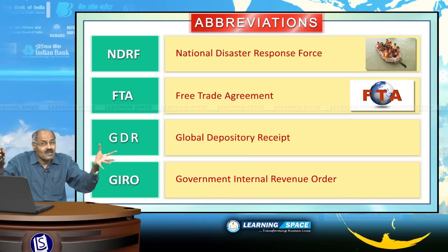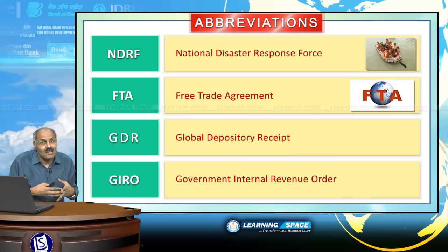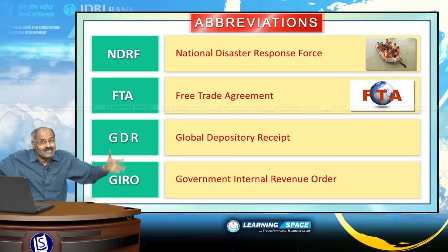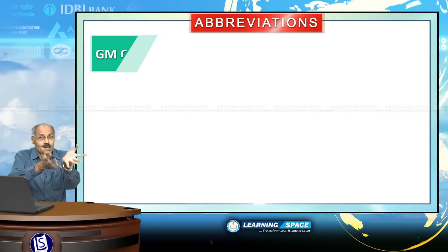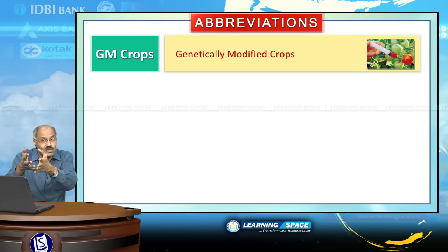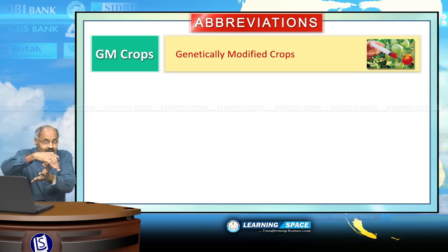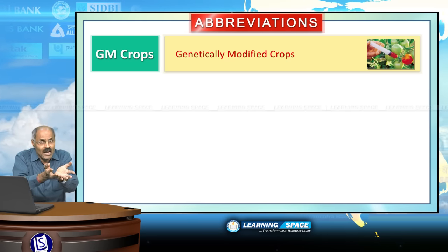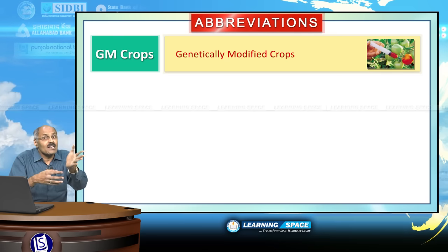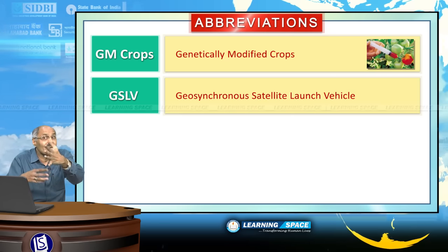The government is trying to come up with a Unified Payment System across the country — that is the Bharat Bill Payment System for all types of retail transactions. Government Internal Revenue Order is the term pertaining to the Unified Payment System. GM Crops is Genetically Modified Crops — this pertains to agriculture, where the DNA of the crop is modified so as to get more yield and ensure better pest resistance. GSLV is Geosynchronous Satellite Launch Vehicle.